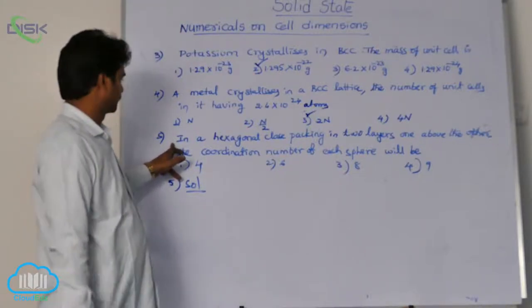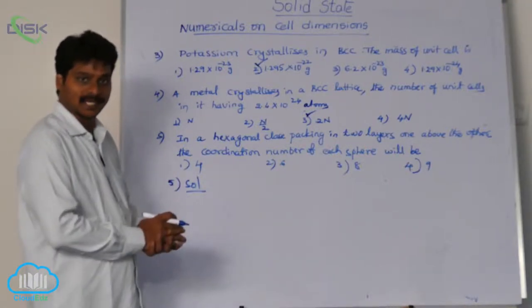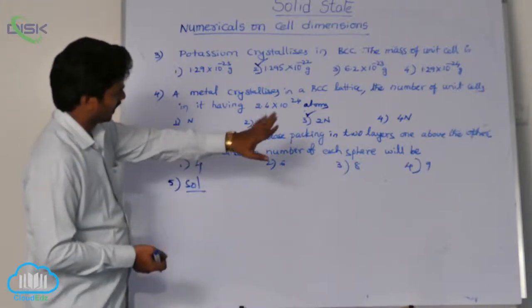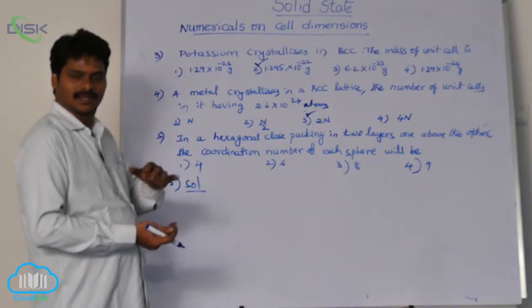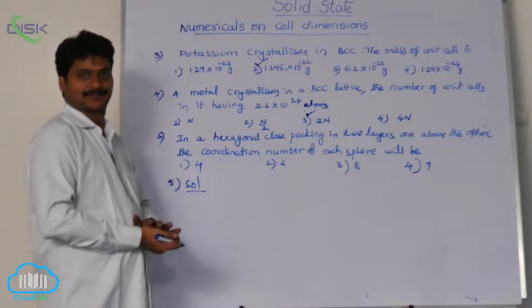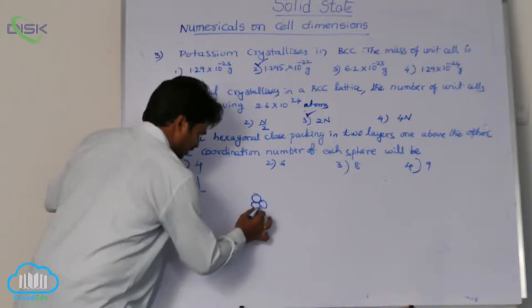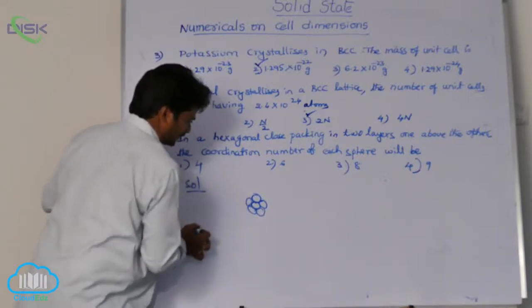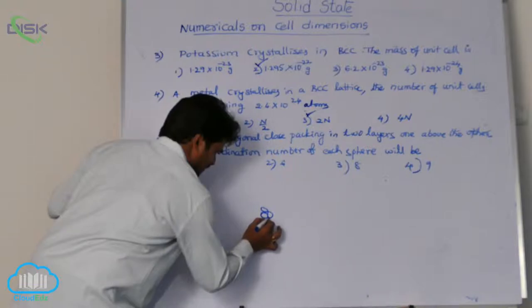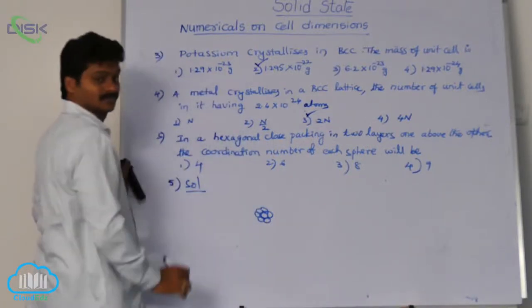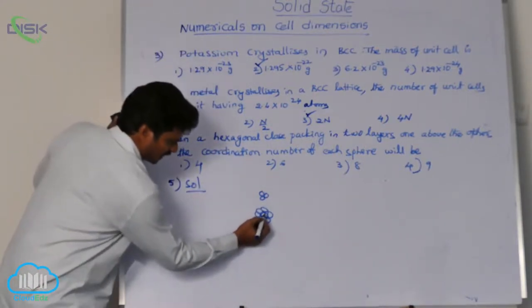In hexagonal close packing with two layers taken one above the other, what is the coordination number of each sphere? In hexagonal close packing, each sphere is in contact with six spheres from the same layer. From its above layer, it is in contact with three spheres.